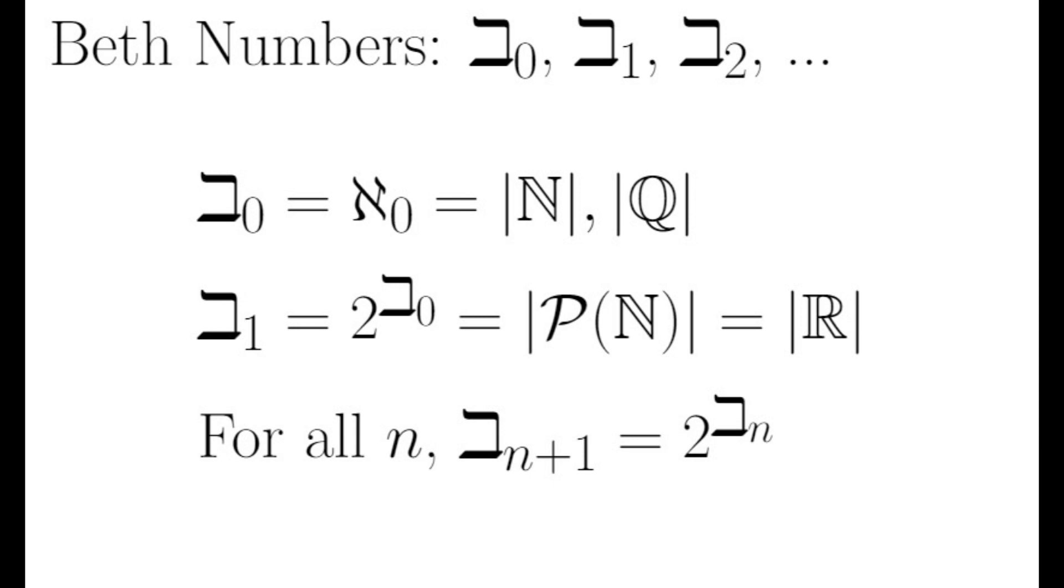We can obtain higher Beth numbers by applying the power set operation from Cantor's theorem. Beth 1 is 2 to the Beth null, which is the size of the power set of the natural numbers. It is also the cardinality of the real numbers.